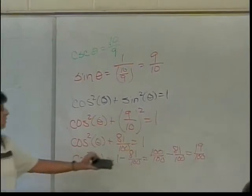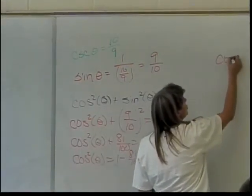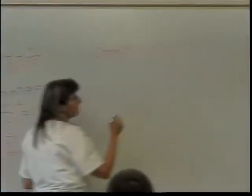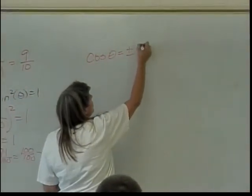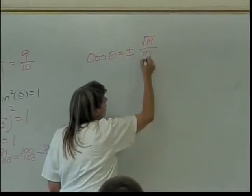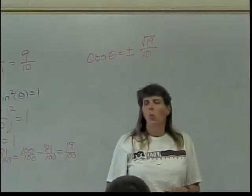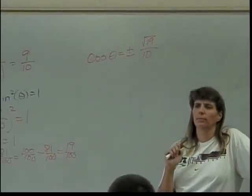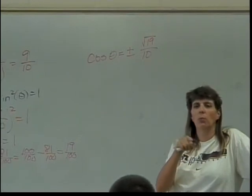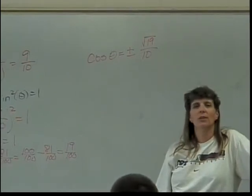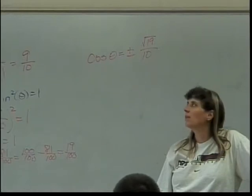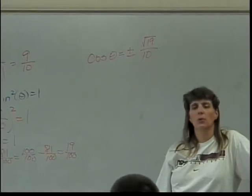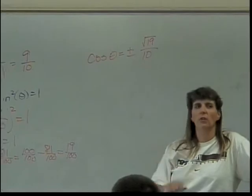So cosine squared of theta equals 19 over 100. That means cosine of theta is what? Plus or minus the square root of 19 over the square root of 100, which is 10. Which one is it, and how do I know? Why? The how do I know part needs to be answered, too. It's negative part of it. It doesn't matter. There are places where the cosecant is...